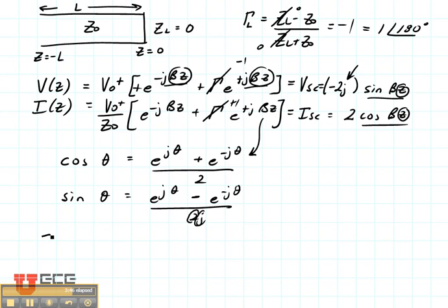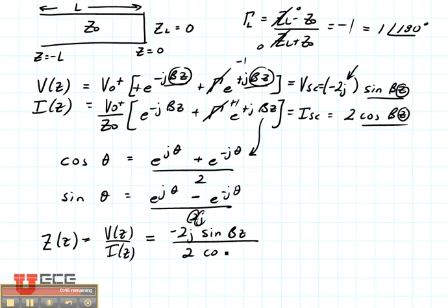Now remember in class we talked about the impedance. The impedance, and this is a total impedance as a function of Z, is going to be V of Z divided by I of Z. This is the impedance, or the ratio of the voltage and the current any place on the line. Remember again, this does not depend on loss. Loss is not the function here. So I simply am going to take this top term, which is minus 2J times the sine of beta Z, and divide it by 2 cosine of beta Z. I also have to consider the V zero plus here, so I end up with a Z zero out front. My twos cancel out, and what I end up with is Z zero times J tangent of beta Z.